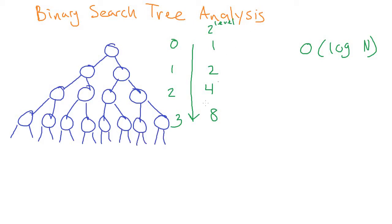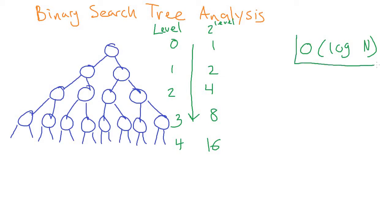On level four we'd have 16 nodes. Every time we add a level of the tree, we basically double the amount of nodes we can store total. There's an exponential relationship between the level of the tree and how many nodes can be stored. Looking at it the other way: to have N nodes, you have log N levels — and so that's where we get the O(log N).